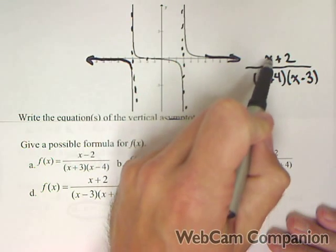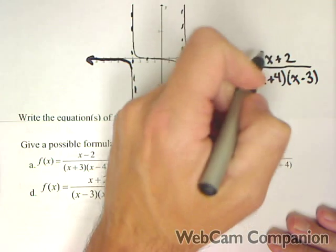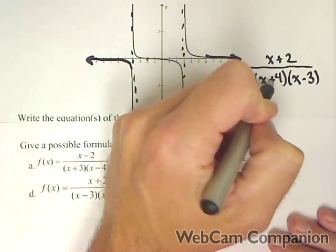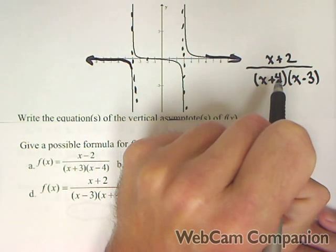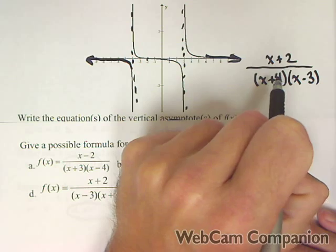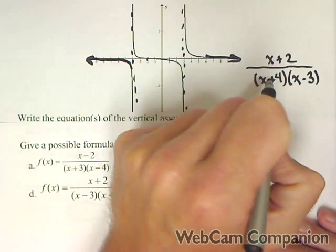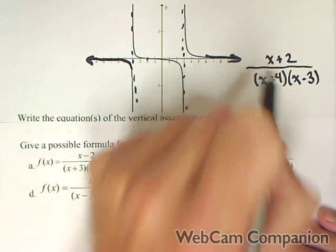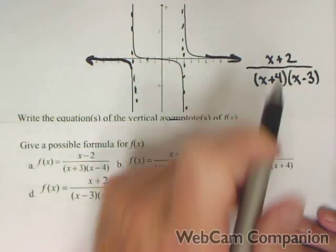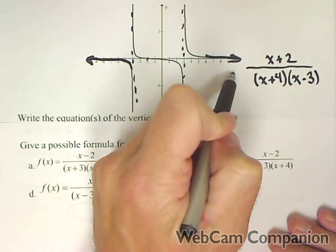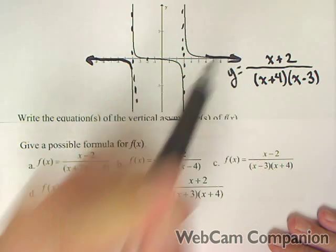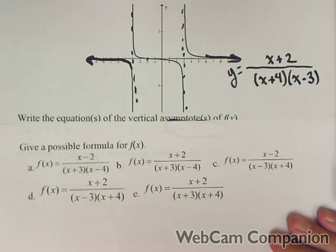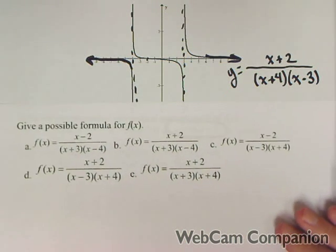This is a degree one over a degree two, so the degree is bigger on the bottom. That means it has a horizontal asymptote at zero, so it's good as is. This is a possible function for our rational function.